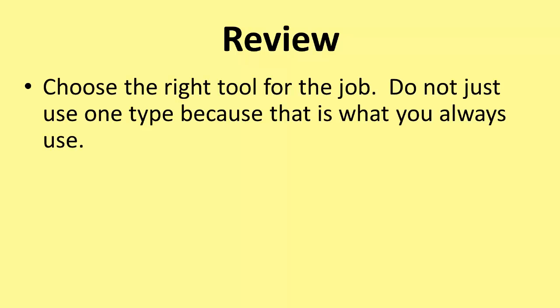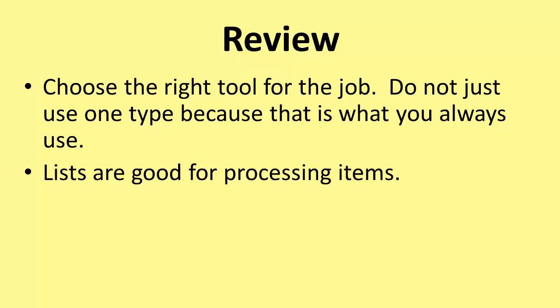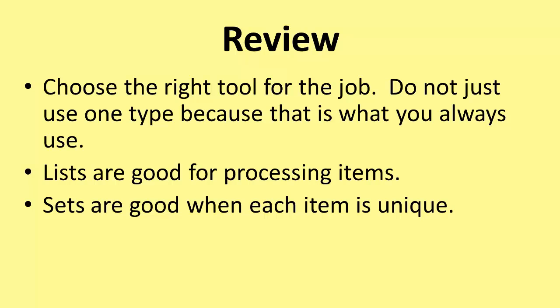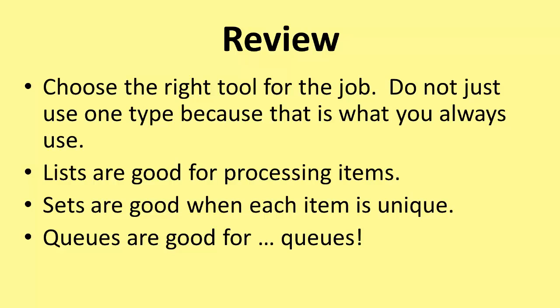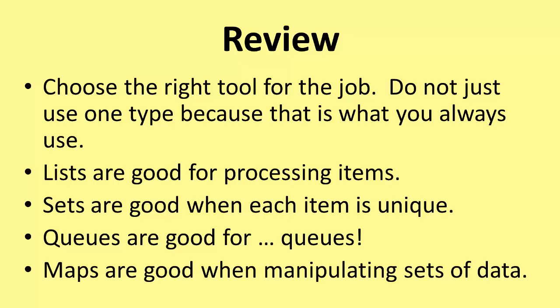All of this has covered quite a complicated area very quickly, so let's have a quick review. Choose the right tool for the job — do not just use one type of list because that's what you've always used. Lists are good for processing items. Sets are good when each item is unique. Queues are good for, well, queues of things, and that happens more frequently than you might expect. And finally, maps are good when manipulating sets of data.